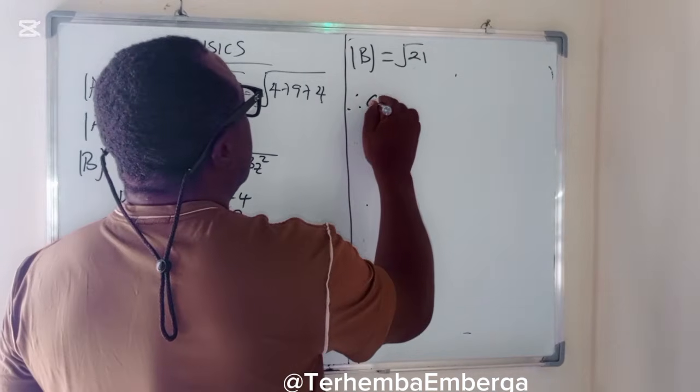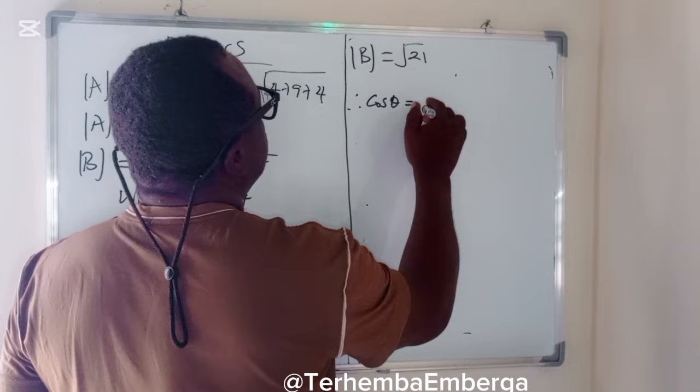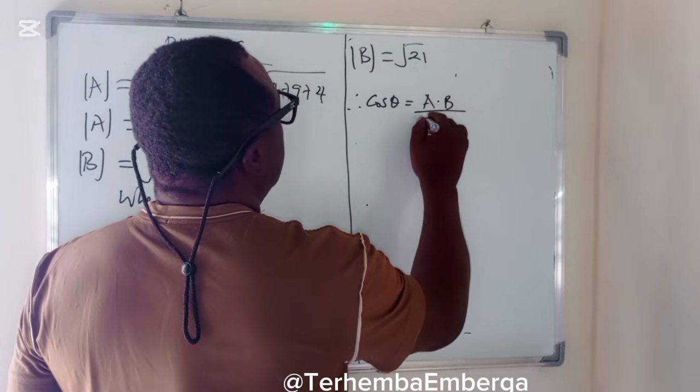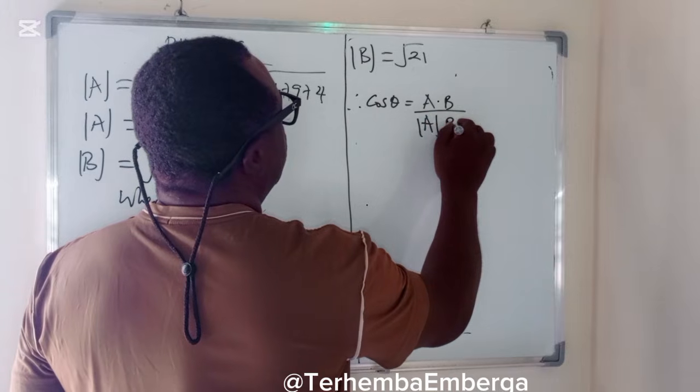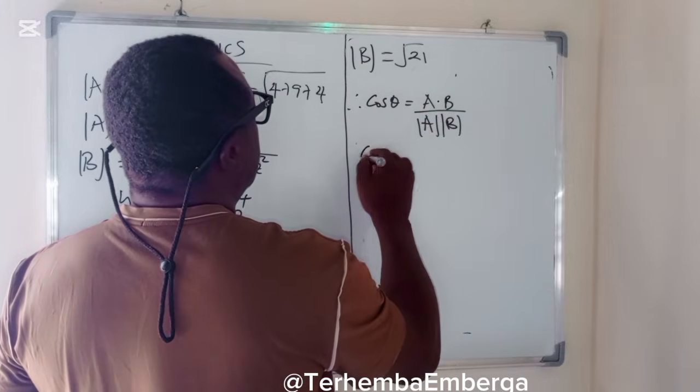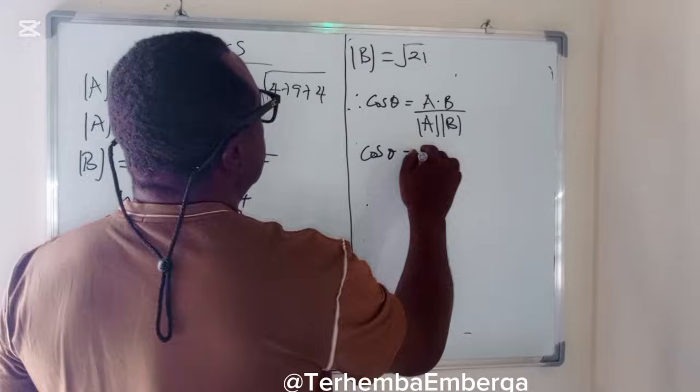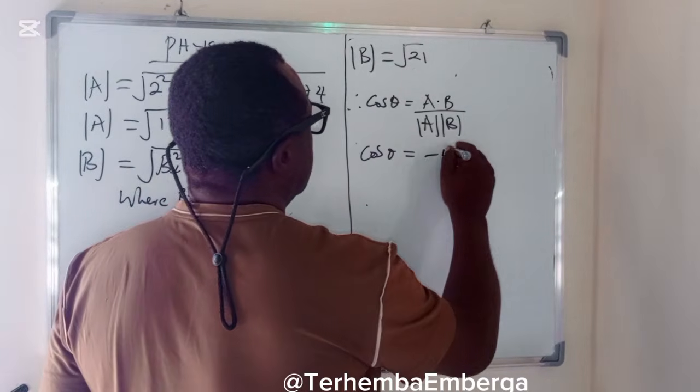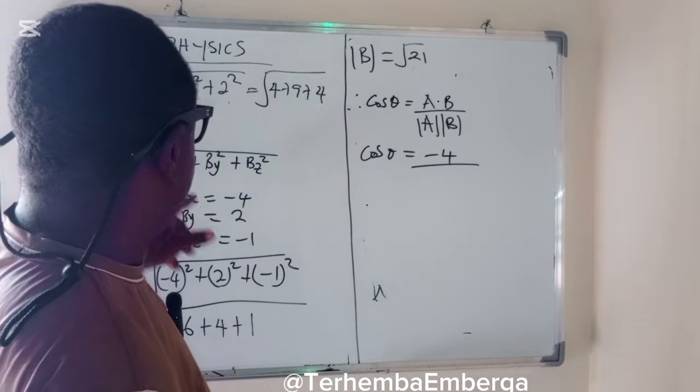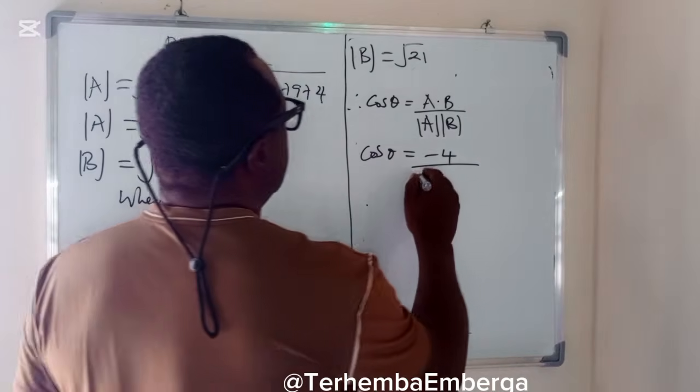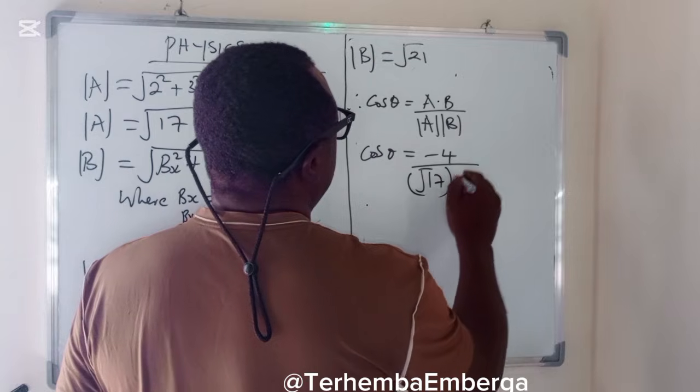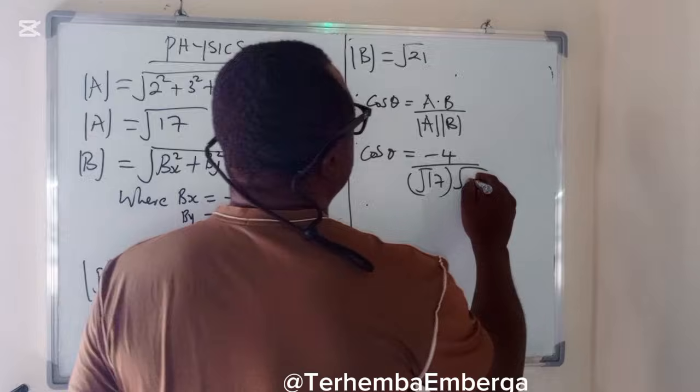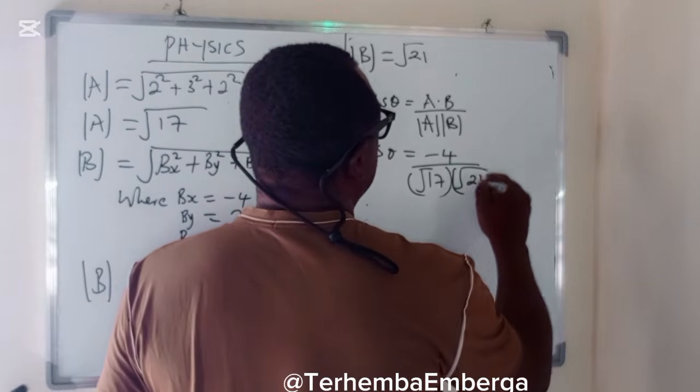So we can now say that therefore, cos θ is equal to, the formula is A dot B all over modulus of A, modulus of B. Cos θ equals A dot B, which is minus 4, all over modulus of A, square root of 17, modulus of B is square root of 21.